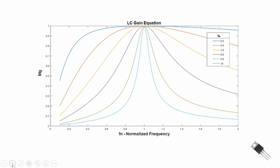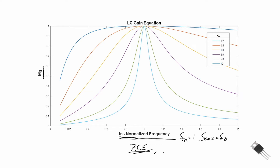In this graph we plot the gain equation M sub G as a function of our normalized frequency F sub N. When F sub N is equal to 1, our switching frequency is at resonance. Recall that we typically want to stay at resonance in order to maintain zero current switching. But we also want to be slightly inductive in order to have the current lagging slightly from our voltage to ensure zero voltage switching. That implies we want to be operating in a region where, if we assume a constant load, that's going to imply a constant QE, and we'll be operating on one of these values of QE.